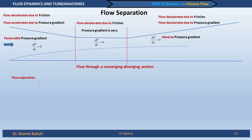One consequence of both friction and pressure gradient opposing the flow is flow separation. Flow separation means the fluid near the solid surface comes to rest — not only the fluid on the solid surface (which is always at rest by the no-slip condition), but the fluid layer immediately next to it also comes to rest.